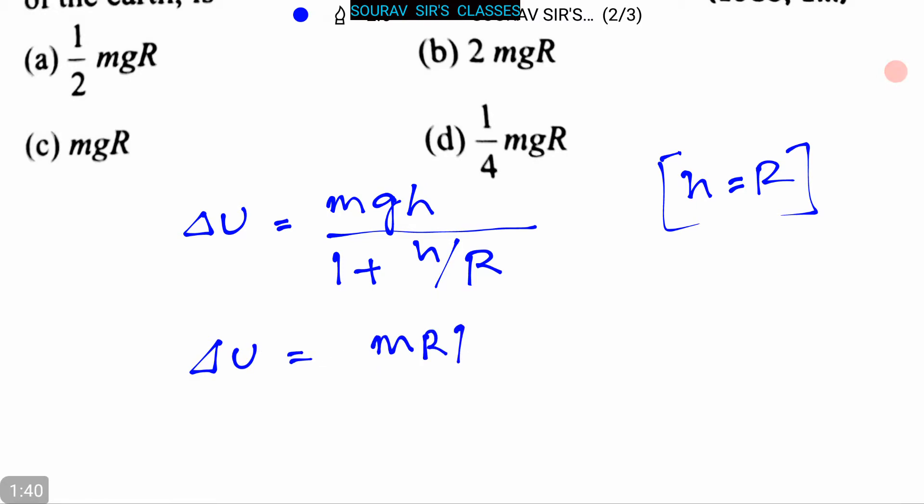divided by 1 plus R by R. Here also we are replacing h by R, so we can rewrite it as 1/2 into mgR.